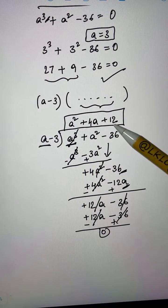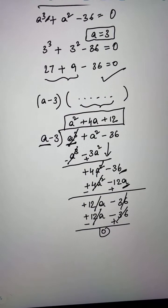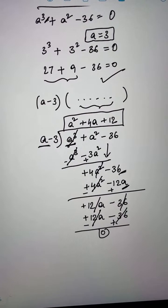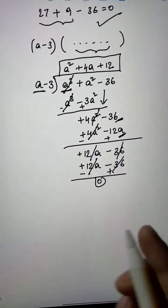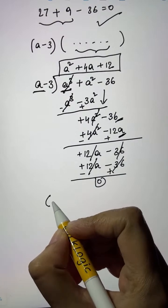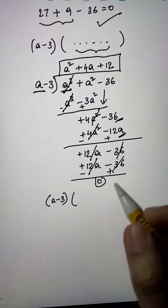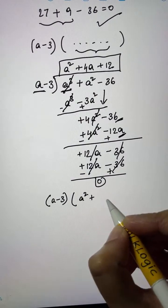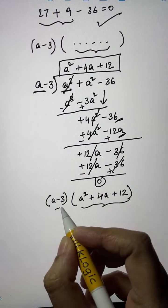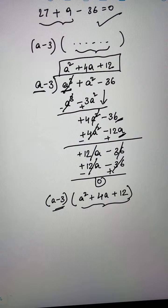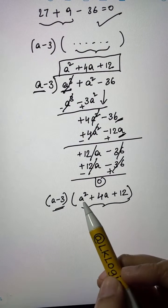The quotient is a squared plus 4a plus 12. So our factored form is (a minus 3)(a squared plus 4a plus 12). But we still have to solve the quadratic equation a squared plus 4a plus 12 equals zero.